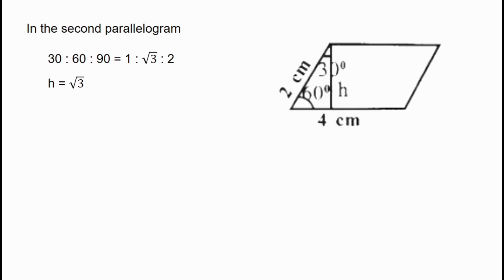Now let's calculate the area of the second parallelogram. The area equals base into height. The base is 4 cm and the height is √3, so we substitute 4 into √3. That gives us 4√3 cm².